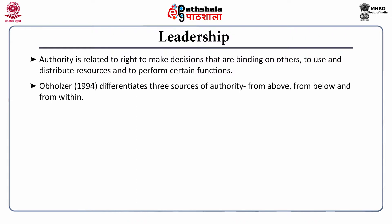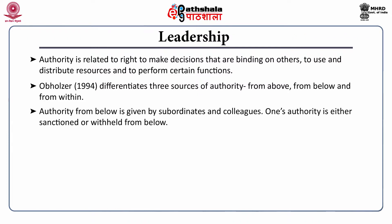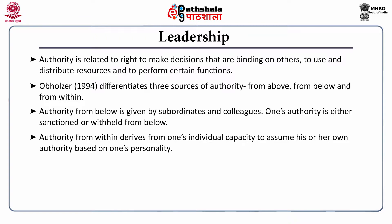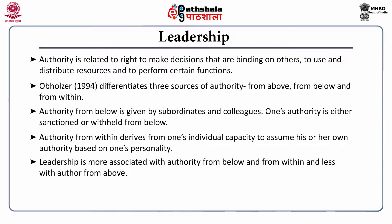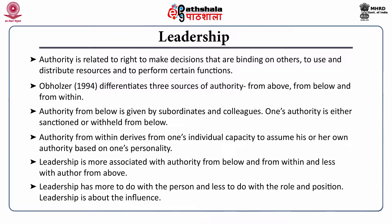Obloser differentiates three sources of authority: authority from above, from below, and from within. Authority from above is derived from a particular role in a social system. Authority from below is given by subordinates and colleagues — one's authority is either sanctioned or withheld from below. Authority from within derives from one's individual capacity to assume authority based on one's personality. Leadership is more associated with authority from below and from within, and less with authority from above. Leadership has more to do with the person and less to do with the role and position.